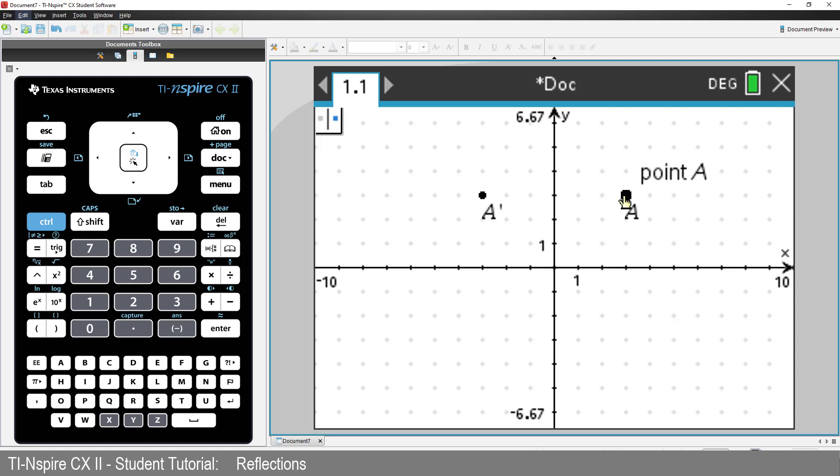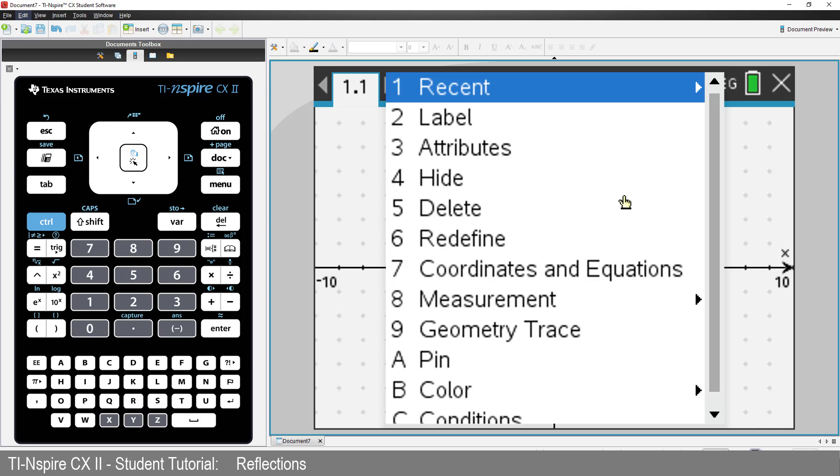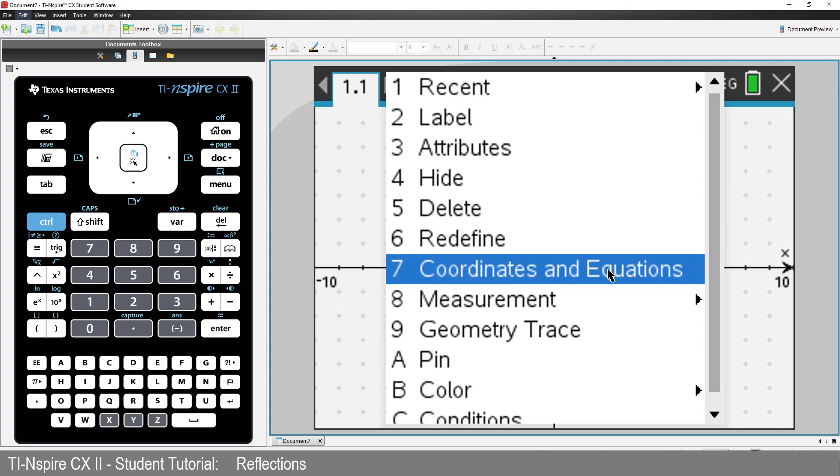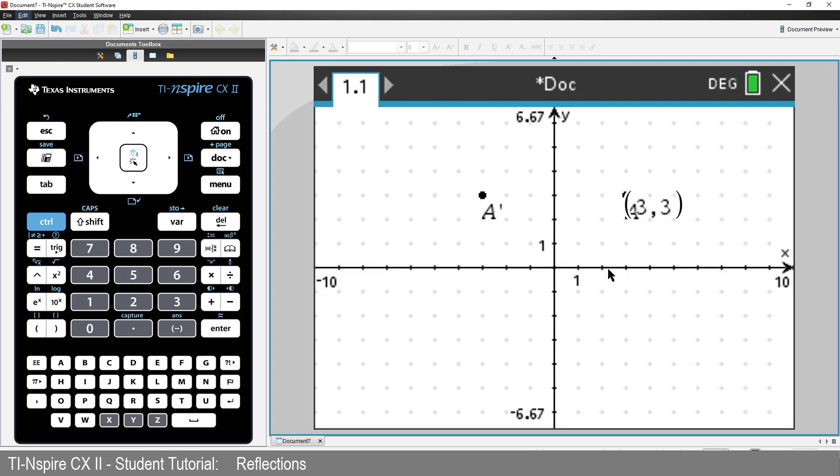Now we want the coordinates of these points. Move the mouse over Point A, then press Control followed by Menu. Select Coordinates and Equation. Do the same for A-Prime.